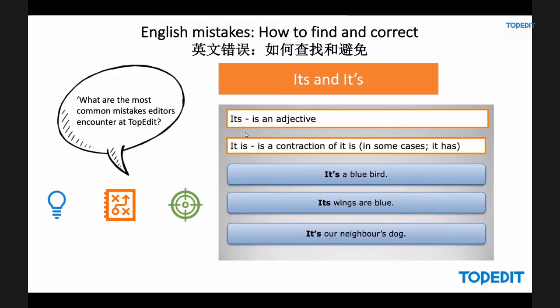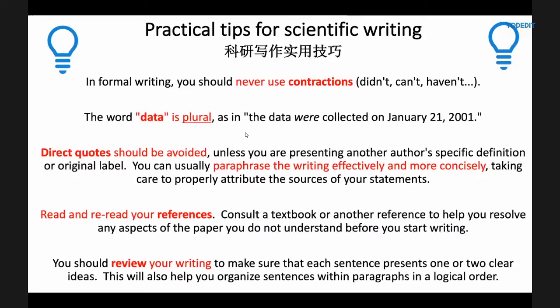It's and its: 'its' without the apostrophe is an adjective. In contrast, the use of an apostrophe means you're contracting 'it is.' For example: 'It's a bluebird' — meaning 'it is a bluebird.' 'Its wings are blue' — the bird has blue wings. 'It's our neighbour's dog.' Be very careful about the way you use these. Unless you wish to imply the contraction of 'it is,' use the adjective form in your English writing.